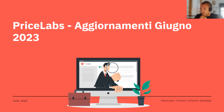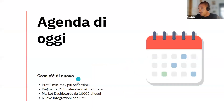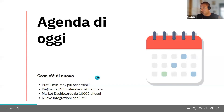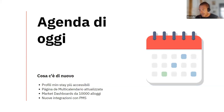Sono Alessandro, consulente per l'Italia. Vediamo cosa abbiamo come novità dell'ultimo periodo: ci sono dei miglioramenti per i profili di permanenza minima, di minstay, che sono più accessibili e si trovano adesso in varie configurazioni. Abbiamo migliorato il filtraggio e le funzionalità della pagina di multicalendario. Adesso c'è la possibilità di creare le dashboard per 10.000 appartamenti — prima era per 1.000 o 5.000 — e abbiamo varie integrazioni nuove con dei nuovi PMS.